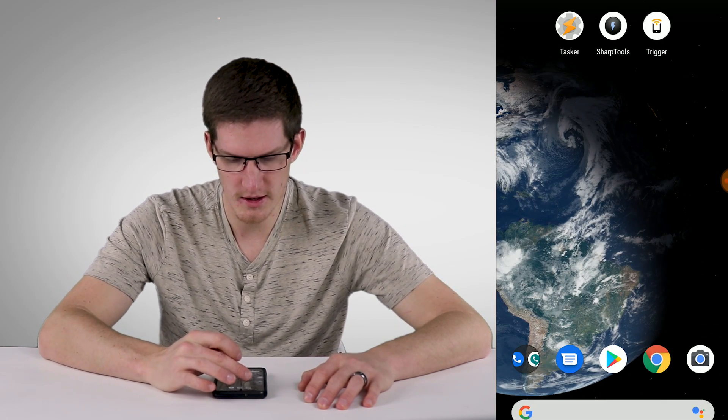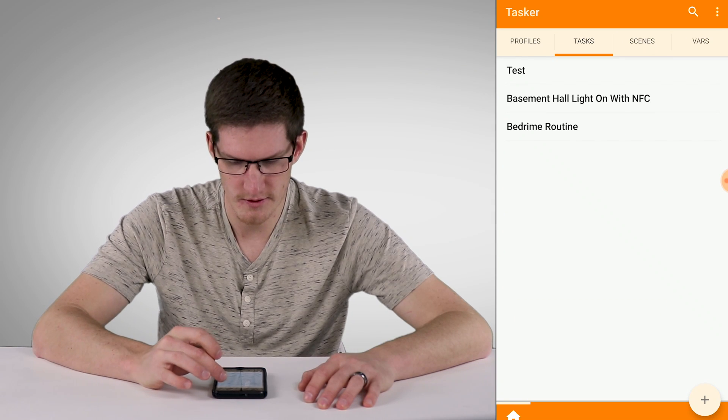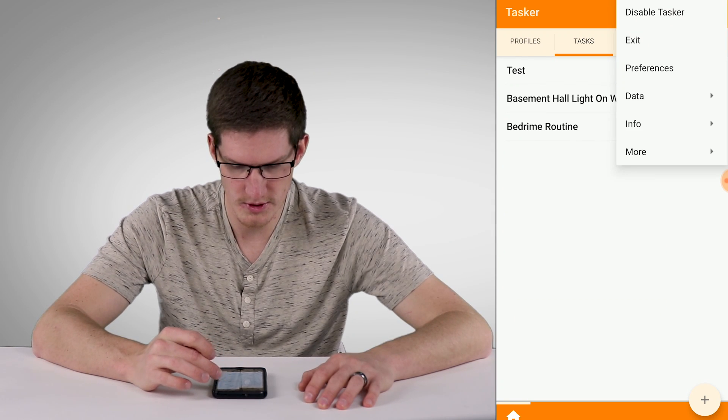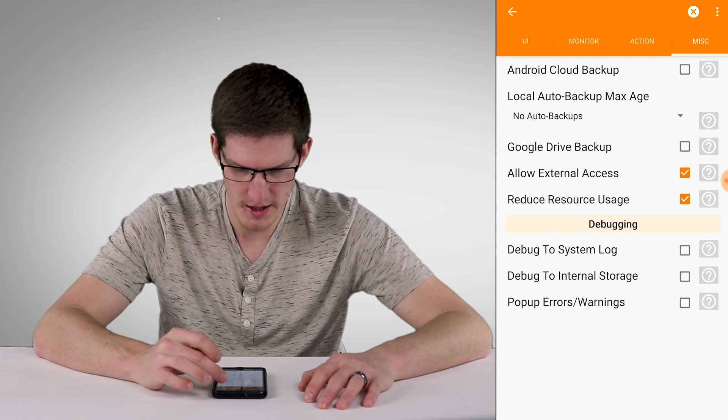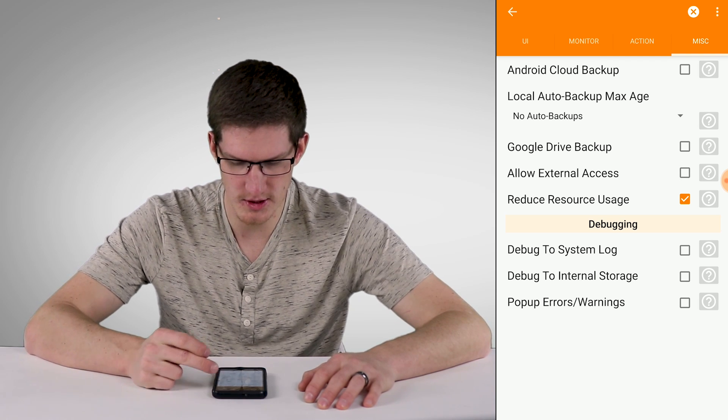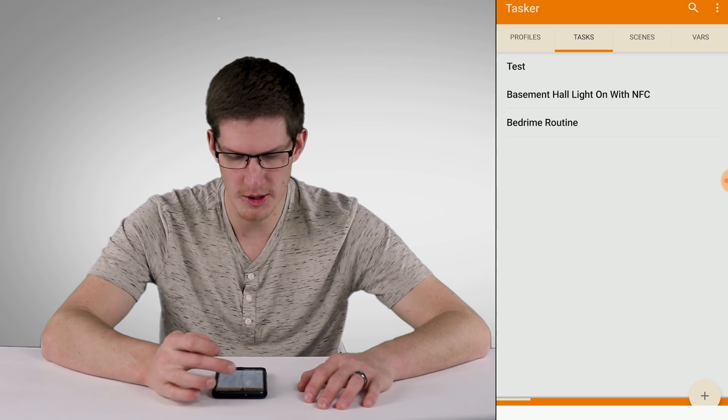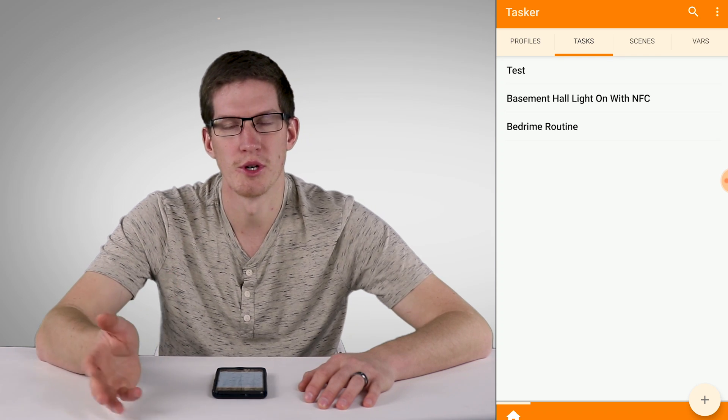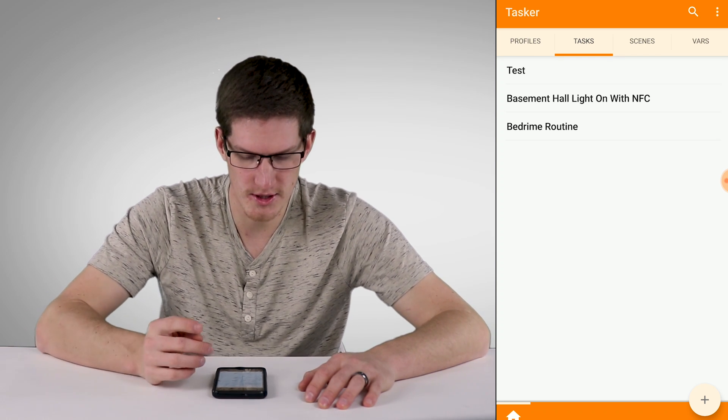Now we will go back and go into Tasker. The first thing you want to do is go into Settings and Preferences and Miscellaneous over at the side. And you want to tick this box, Allow External Access, and what that allows is the trigger app to talk to Tasker. That's all that does.